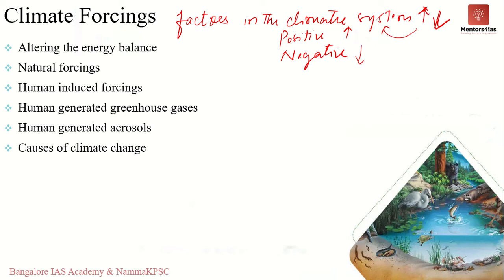Throughout history, super volcanoes have spewed out so much ash that it blocks sunlight from reaching the surface, generally resulting in cooling of the earth. Under climate forcings, we will discuss: altering the energy balance, natural forcings, human-induced forcings, human-generated greenhouse gases, human-generated aerosols, and how climate change is caused by these forcings — whether cooling or warming — depending on whether they are negative or positive.